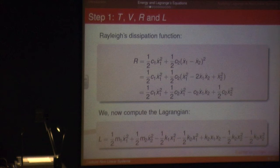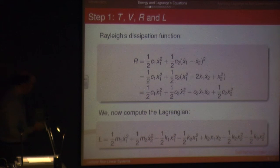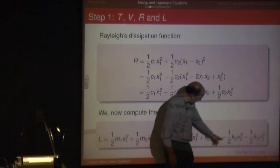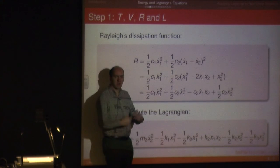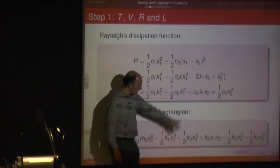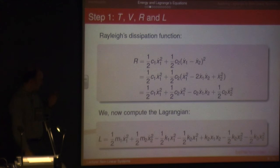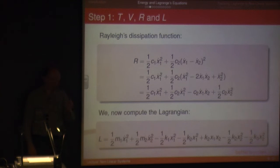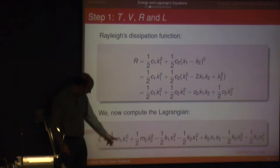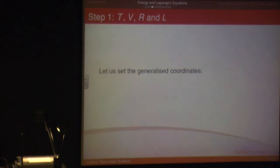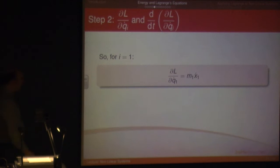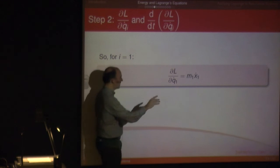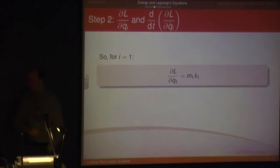Going back to L, the first process is to find DL over DX1-dot. It's quite straightforward because all the terms that do not contain X1-dot are assumed to be constants — you take the derivative of a constant and get zero, they all disappear. We're dealing with Q1, or X1, so the only term we have to differentiate with respect to X1-dot is the first kinetic energy term. Taking that derivative, the 2 comes down, two times one-half becomes one, and you end up with M1 X1-dot. Anything without X1-dot in it disappears, and you just take the straightforward derivative.